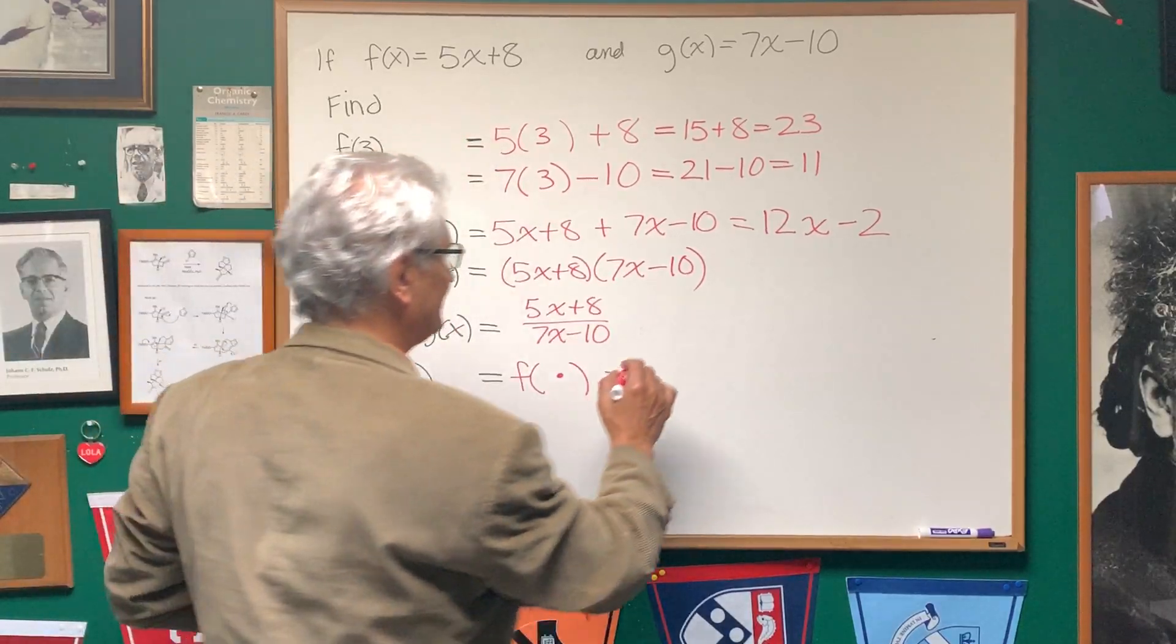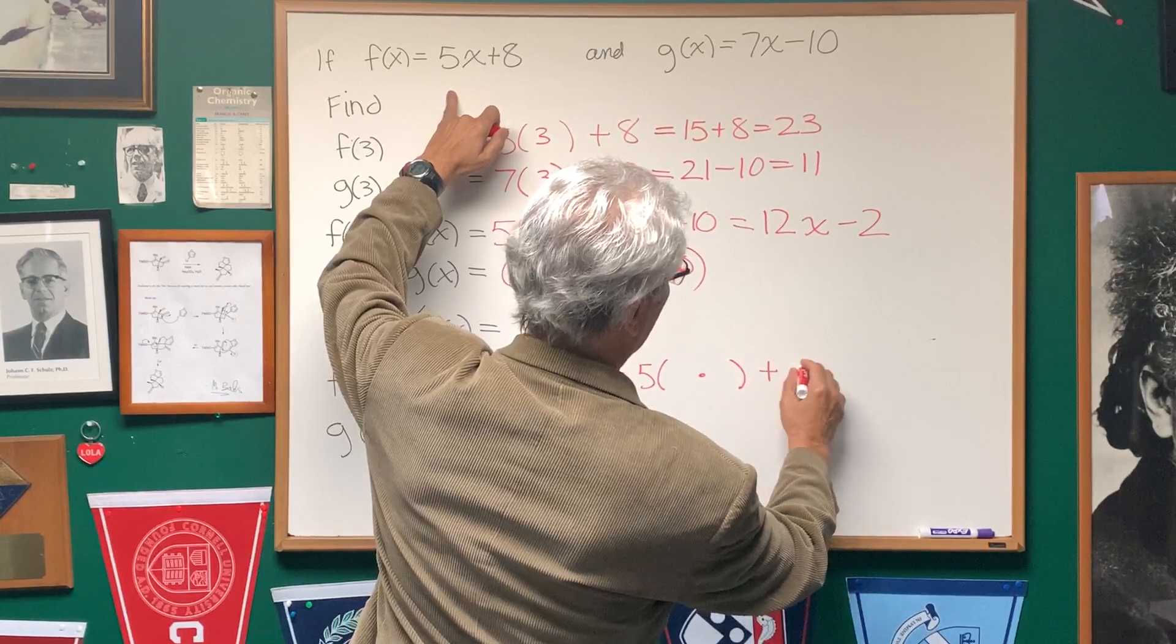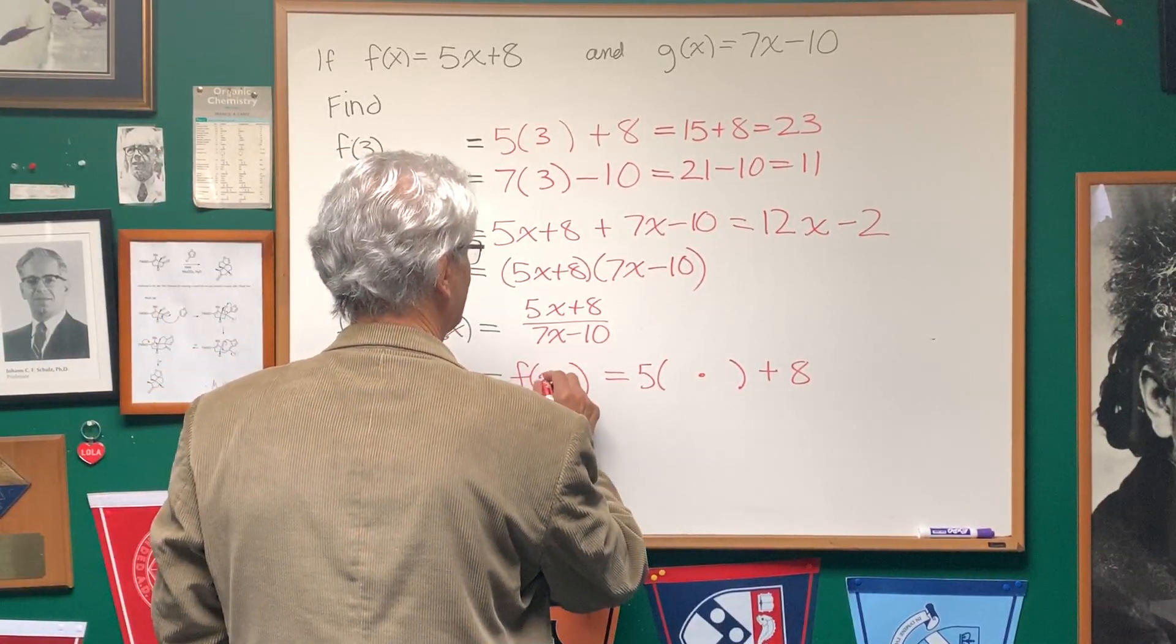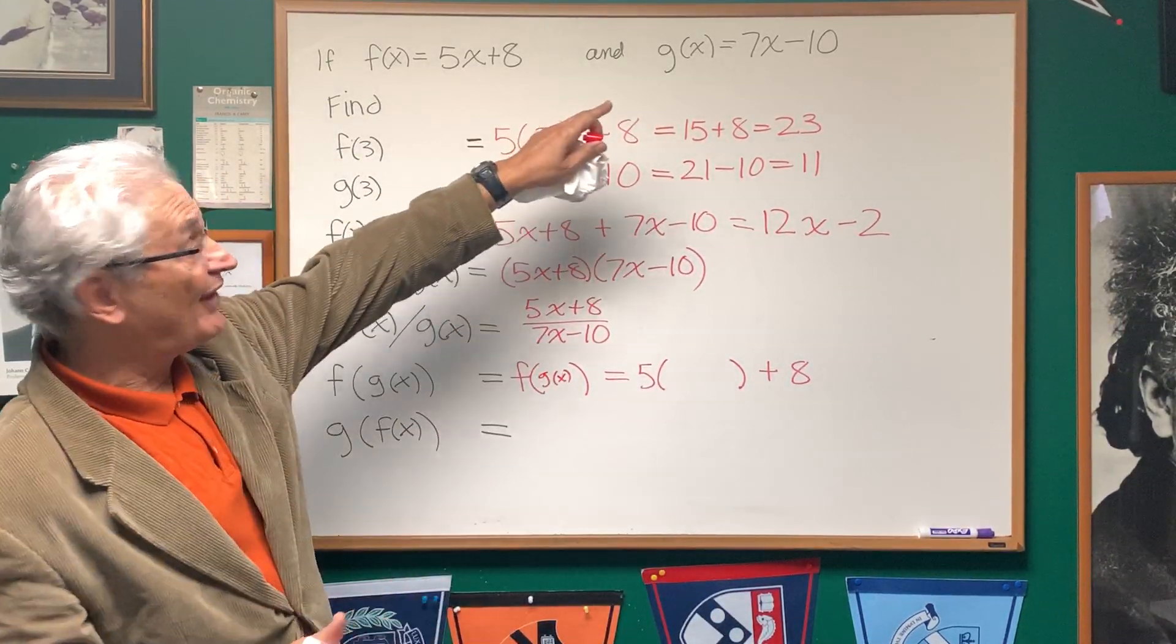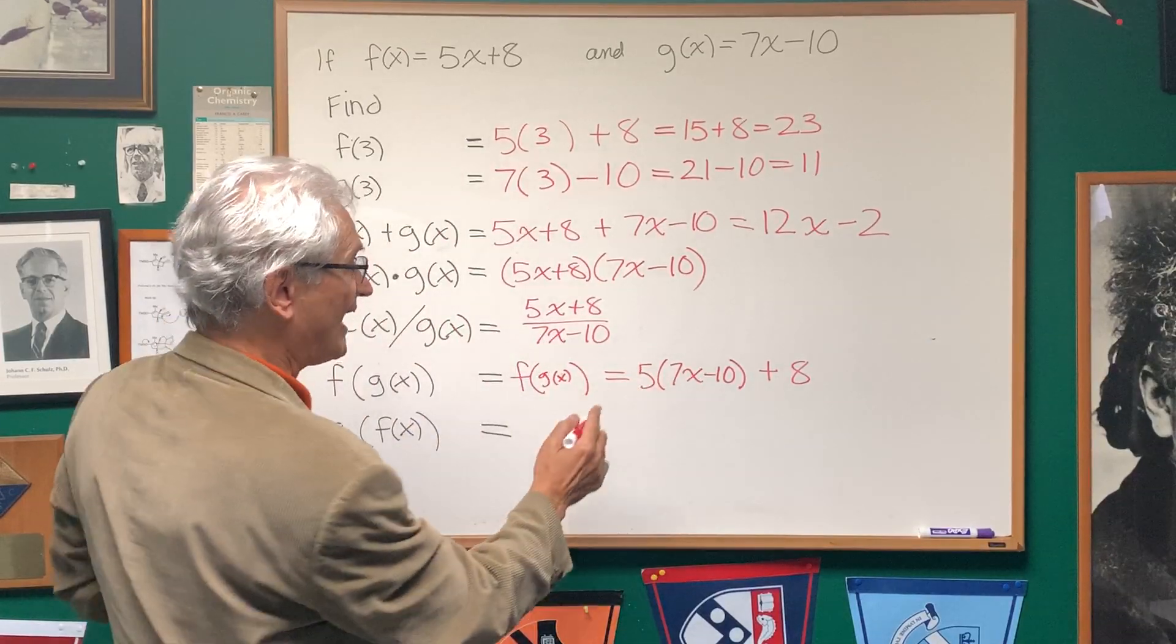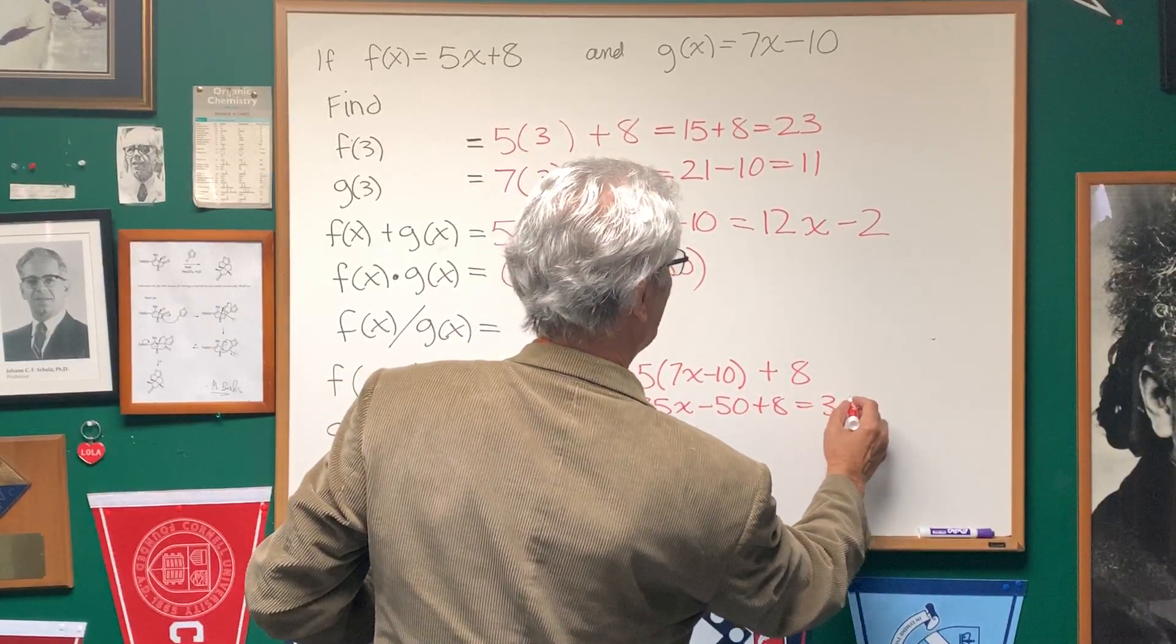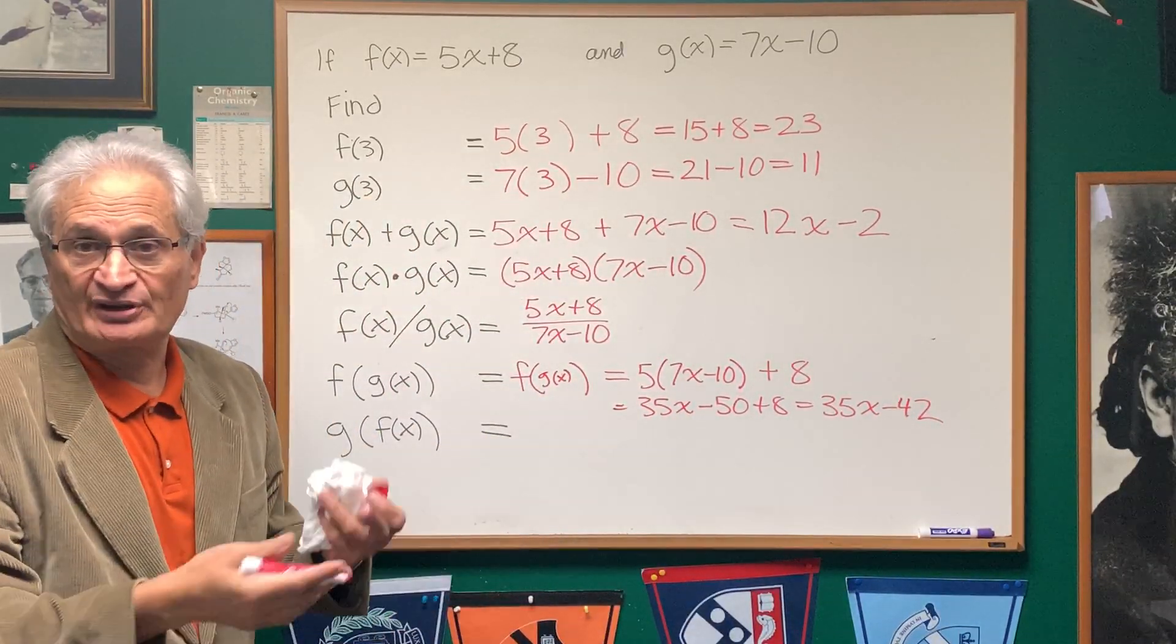What's f(dot)? f(dot), as we can see from the definition up here, is 5 times dot plus 8. So what we're going to do is replace the dot on the left with g(x), because that's what we're inserting in place of x. And on the right, we're going to replace that dot with what g(x) represents, 7x minus 10. Multiply that out. 5 times 7x is 35x minus 50 plus 8. And it's 35x minus 42. And there's our composition of those two functions.